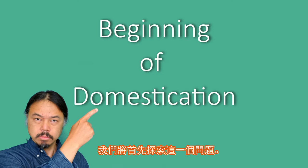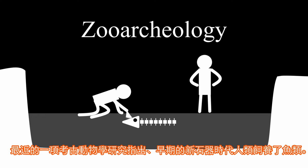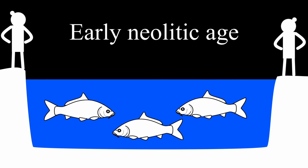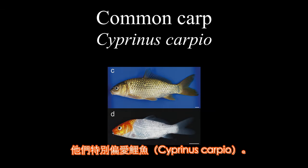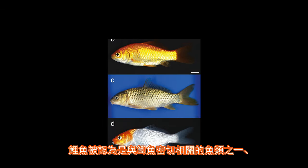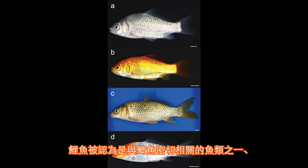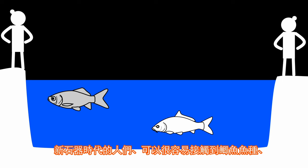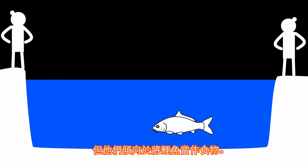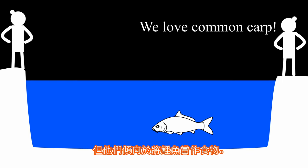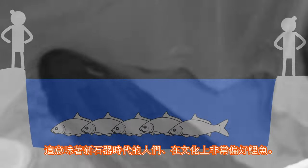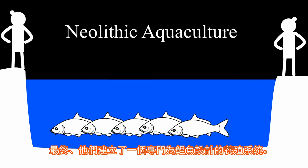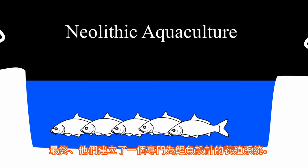But how did the Carassius species interact with humans just before domestication began? A recent archaeological study found that early Neolithic people cultured fish species. They especially preferred common carp, Cyprinus carpio. The common carp is known as one of the closely related fish to Carassius species. The Neolithic people could easily access Carassius species, but they tended to consume common carp as food.